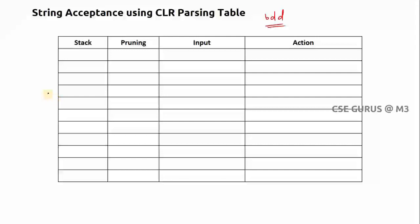The process is the same as what I explained for string acceptance using the SLR parsing table. I am explaining with four columns — you can see here — I feel this is very easy. I'll start with dollar here; the first item is I0, so we write zero. The input is BDD ending with dollar.